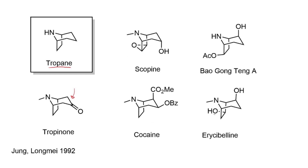Here are just a handful of tropane-containing natural products: scopine with an ester at this position, scopolamine which is an important anticholinergic drug, cocaine which is a well-known stimulant, and erisibyline which is a dihydroxylated and N-methylated tropane.